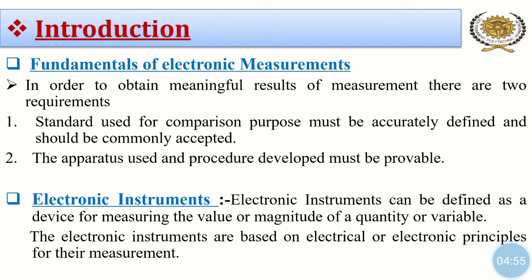Now in order to obtain meaningful results of measurements there are two requirements. First, the standard used for comparison purpose must be accurately defined and should be commonly accepted, like kilogram, centimeter, kilometer, etc. And second, the apparatus used and procedure developed must be provable. If these two requirements are satisfied, then we can say that the measurement is proper or accurate.